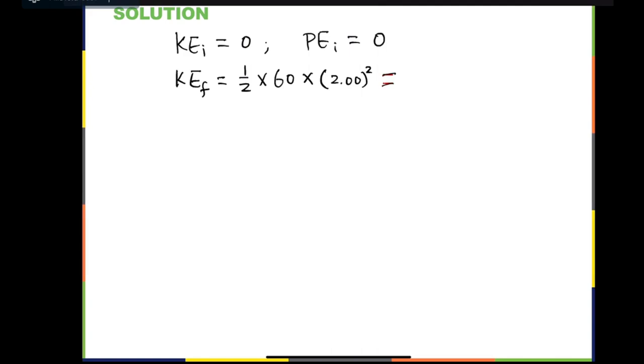This is equal to 120 joules. The final potential energy is equal to mgh, which is 60 kilograms times 9.80 and times the final height, which is 3.0 meters. And this is equal to 1,764 joules.